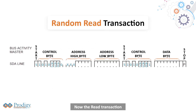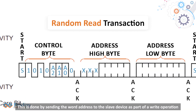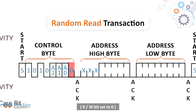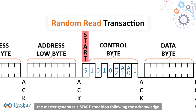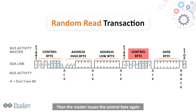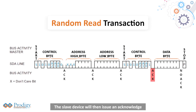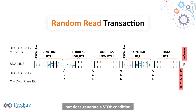Now the read transaction: random read operations allow the master to access any memory location in a random manner. To perform this type of read operation, the word address must first be set by sending it to the slave device as part of a write operation with the R/W bit set to 0. After the word address is sent, the master generates a start condition following the acknowledge. The master then issues the control byte again with the R/W bit set to 1. The slave device issues an acknowledge and transmits the 8-bit data word. The master does not acknowledge the transfer but generates a stop condition, causing the slave to discontinue transmission.